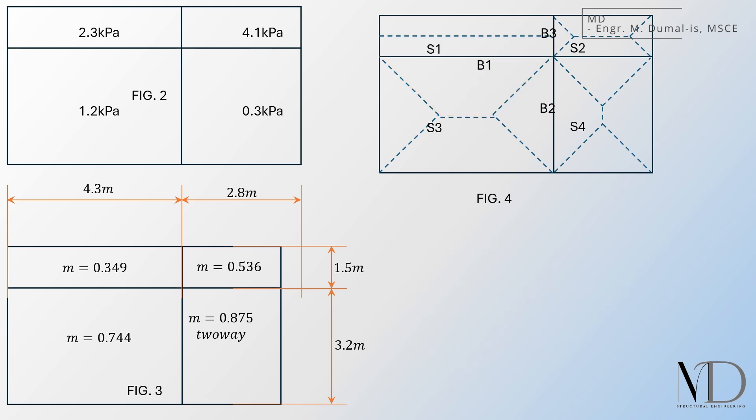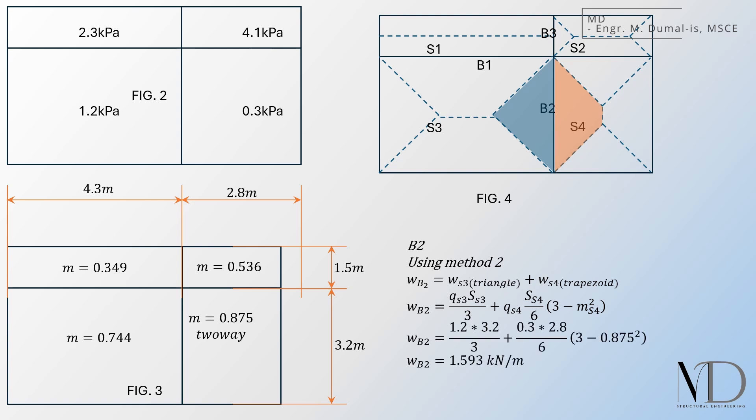For beam B2, we are required to use method 2. B2 carries a portion of S3 and S4. We take the shorter span equivalent UDL for S3, and the longer span UDL equivalent for S4. The final uniformly distributed load for beam B2 will be...